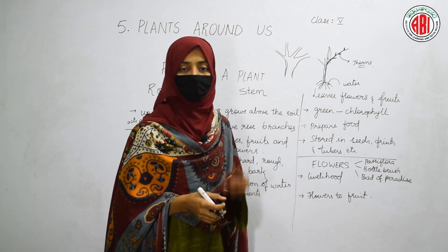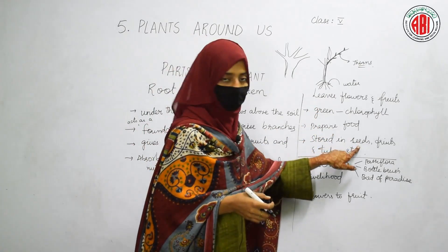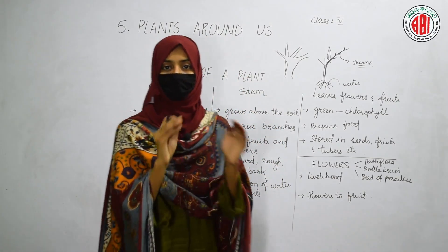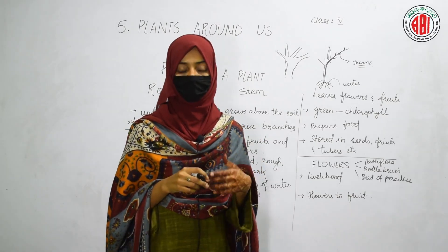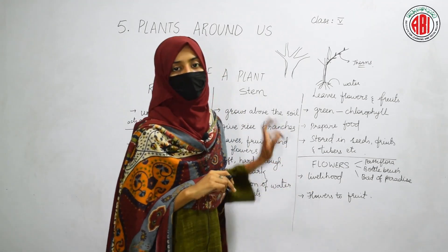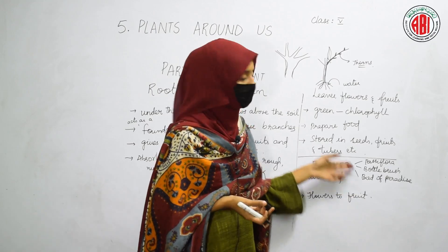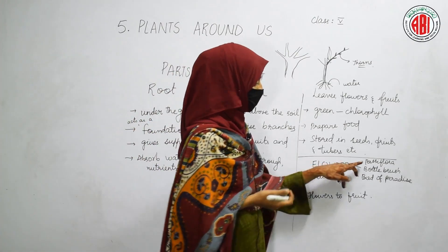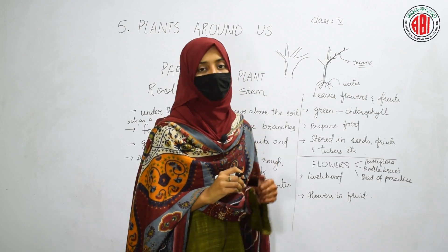Leaves are green in color because of the pigment chlorophyll, and leaves are the parts that prepare food. That food gets stored in seeds, fruits, and tubers. Whenever we eat the fruit or seeds of different plants, the energy stored in them is transferred to our bodies. Essentially, human beings and animals are all dependent on plants for their food.